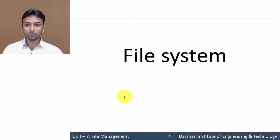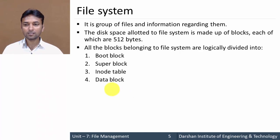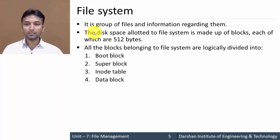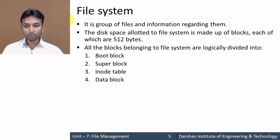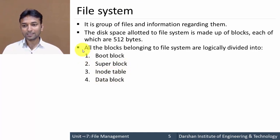Next, what is a file system? A file system is a group of files along with information regarding them. The disk space allocated to a file system is made up of blocks, and each block is 512 bytes. All blocks belonging to a file system are logically divided into four categories: boot block, super block, inode table, and data block.